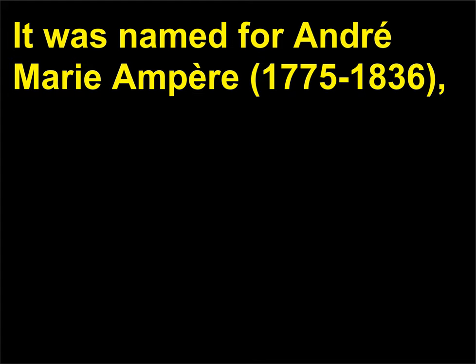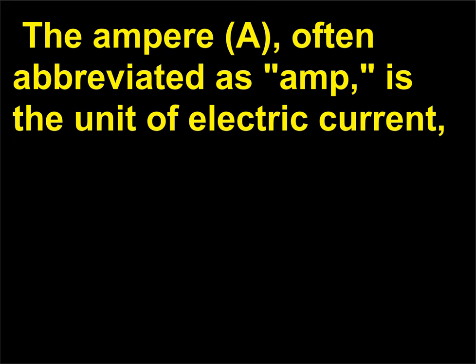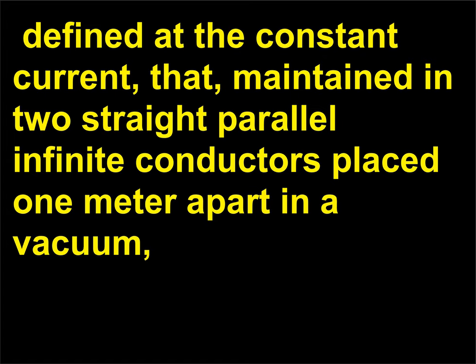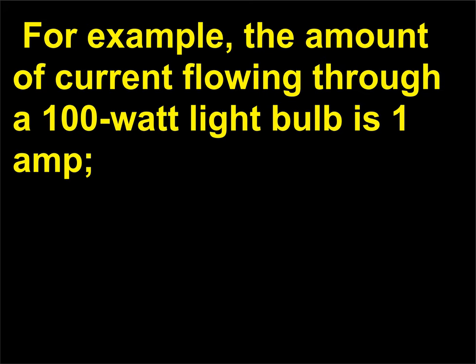It was named for André-Marie Ampère (1775–1836), the physicist who formulated the basic laws of the science of electrodynamics. The ampere, A, often abbreviated as amp, is the unit of electric current, defined as the constant current that, maintained in two straight parallel infinite conductors placed one meter apart in a vacuum, would produce a force between the conductors of 2×10⁻⁷ newton per meter. The amount of current flowing through a 100-watt light bulb is 1 amp.